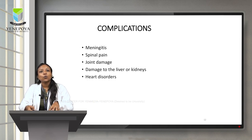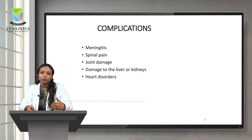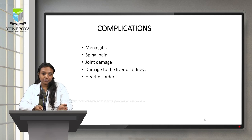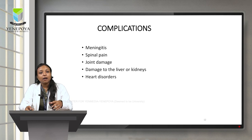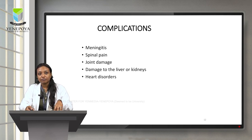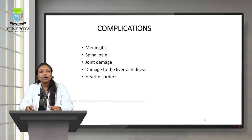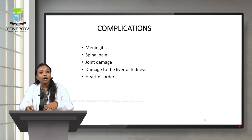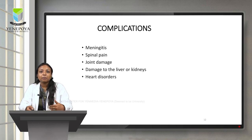Regarding complications — what complications does a patient with pulmonary tuberculosis face? These include meningitis (inflammation of the meninges), spinal pain, joint damage, damage to the liver or kidneys, and heart disorders.